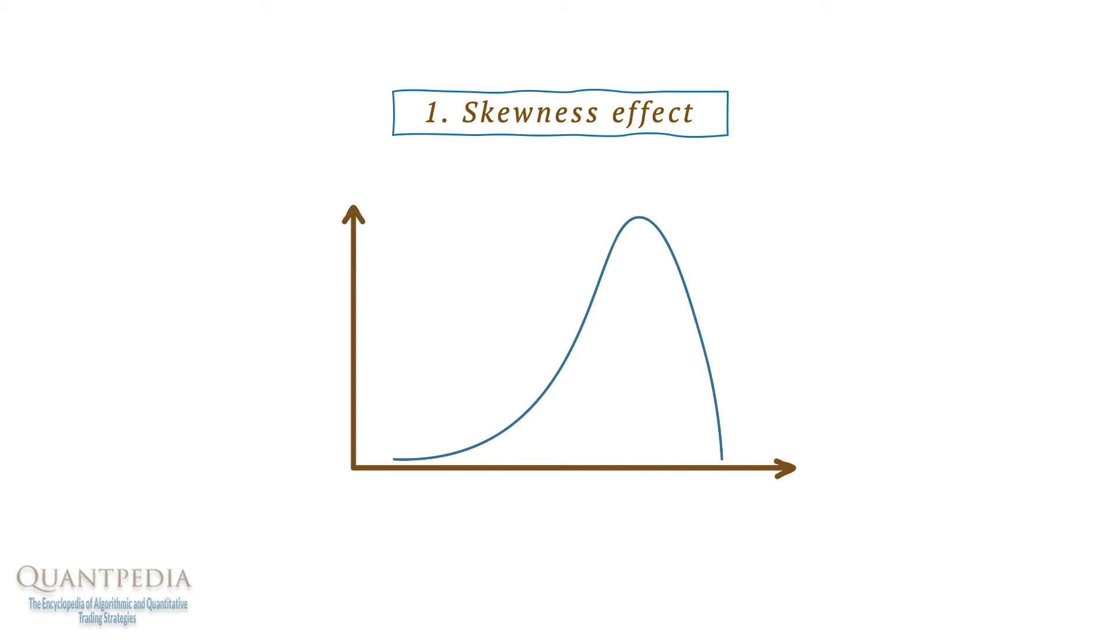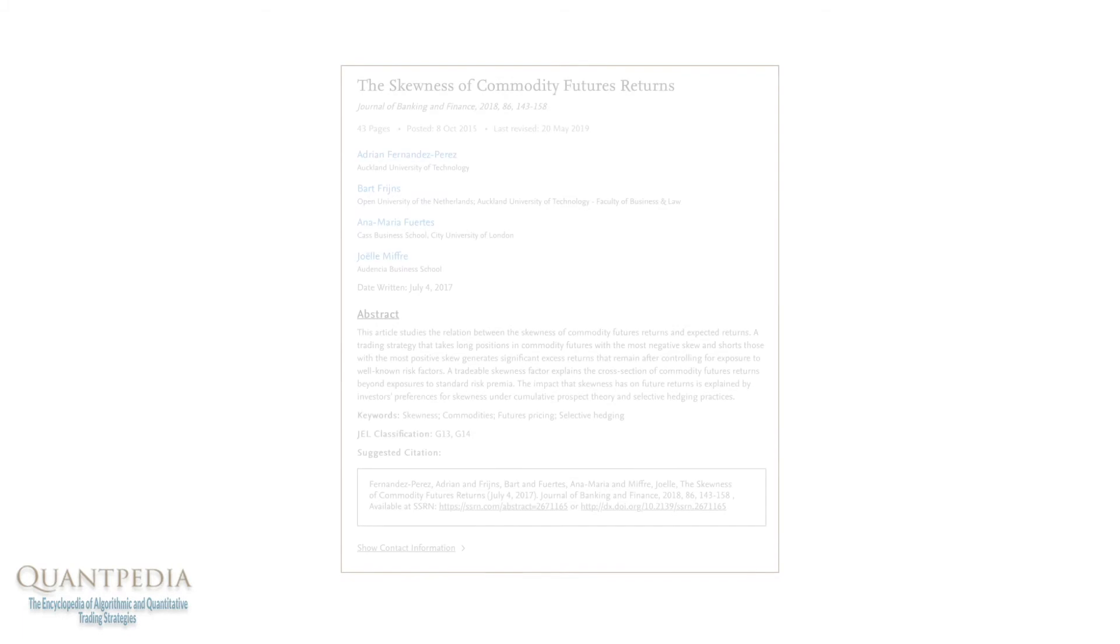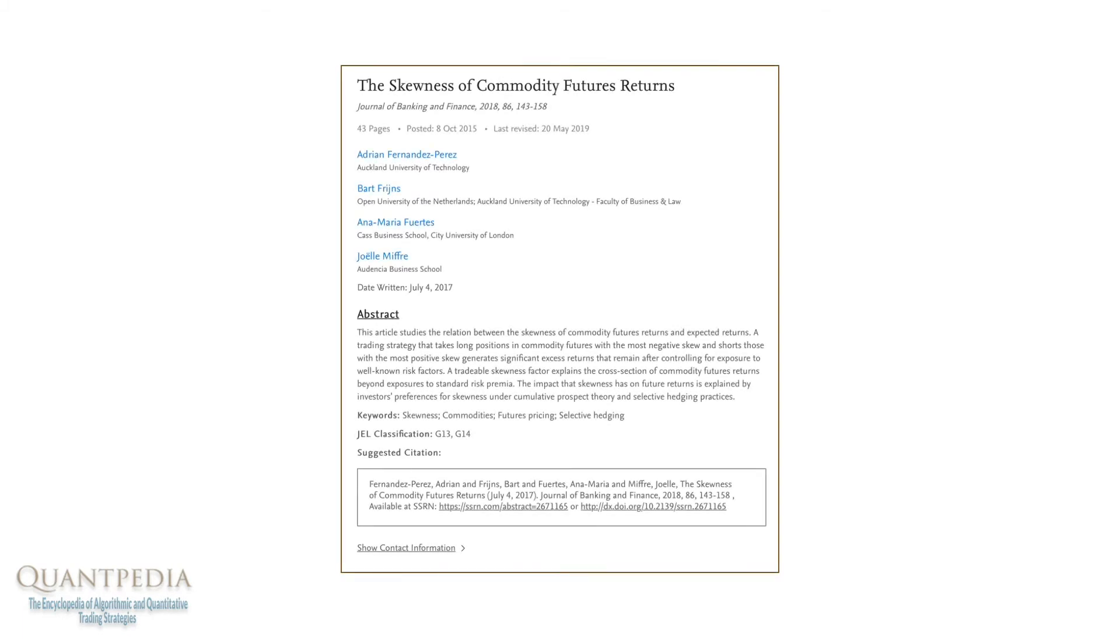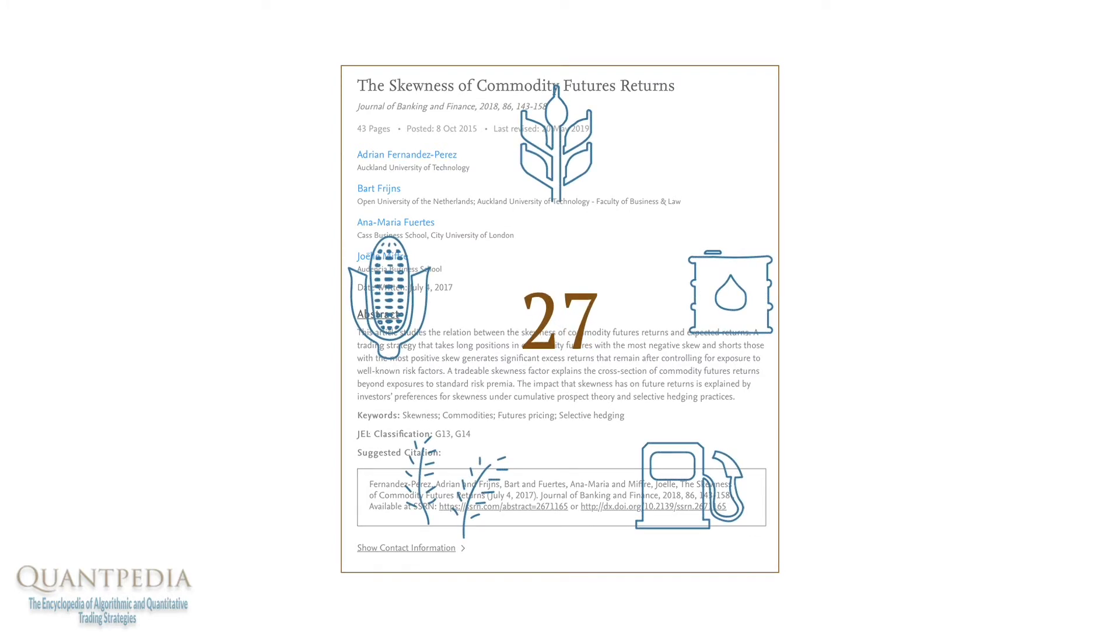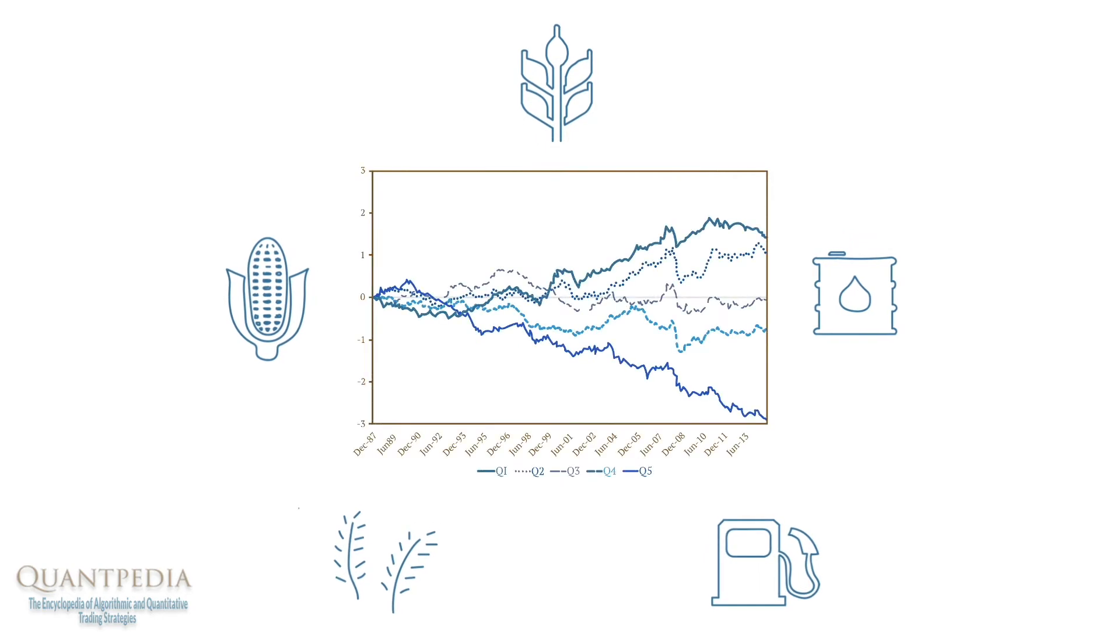Now, the average value of the data set is higher than the mean value. The best known example of skewness effect in trading is a research paper from Fernandez Perez and others, The Skewness of Commodity Futures Returns. The team around Fernandez Perez examined the skewness in returns distribution for a group of 27 commodities futures contracts. Based on findings, the researchers proposed a trading strategy of going long on commodities futures with the lowest skewness in returns and going short on commodities futures with the highest skewness in returns.